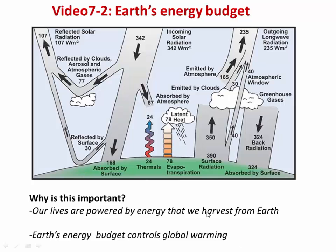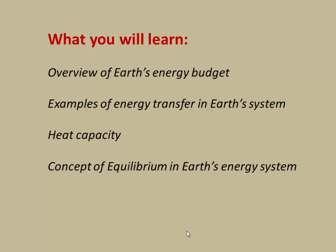So why do we care about this stuff? Well, for one thing we extract energy from this system like wind and solar, and also this system is what controls global temperature and global warming. In this video we'll talk about an overview of Earth's energy budget, then look at examples of energy transfer within Earth's system, the concept of heat capacity especially as it relates to the ocean, and then the concept of an equilibrium energy balance in Earth's system.